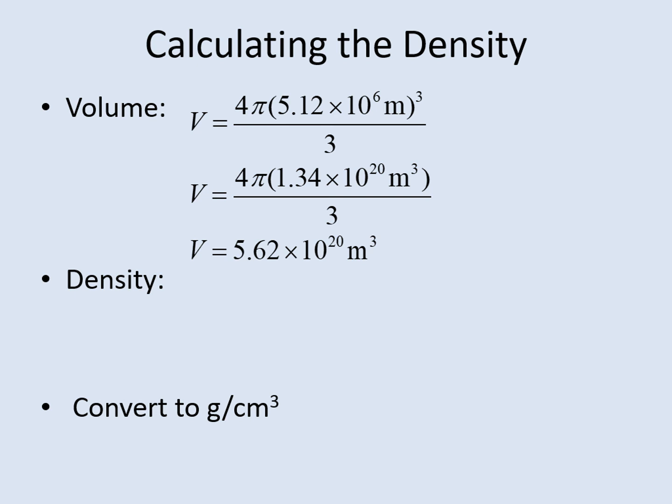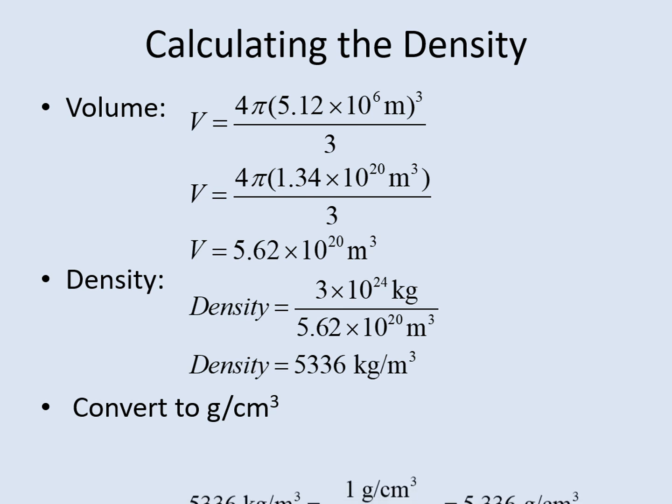Next, we calculate the density by dividing mass by volume. In general, you should get a density in the hundreds to thousands of kilograms per cubic meter here. If it's outside that range, you should go back and check the calculation, especially the volume, since that's the most complex part of the calculation.